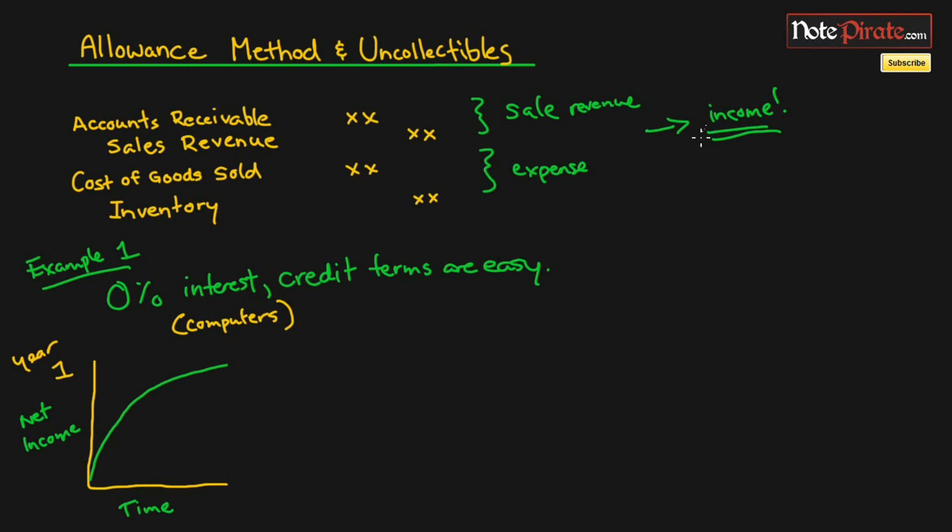But what's going to happen is with all these easy credit terms and low interest rates, we might take on customers that may not be able to pay their bills in the future. These are going to possibly lead to uncollectibles or receivables that we cannot collect.